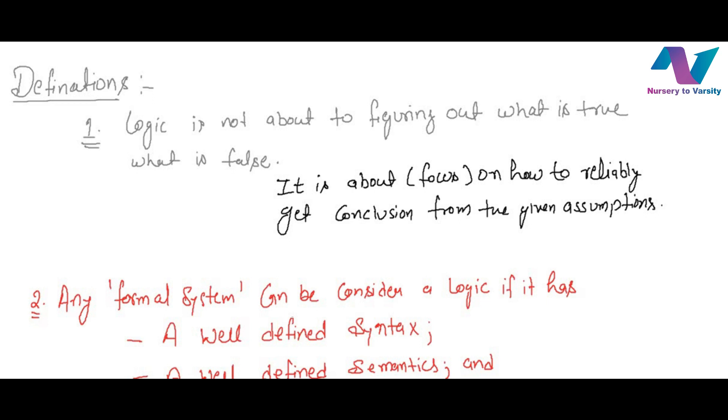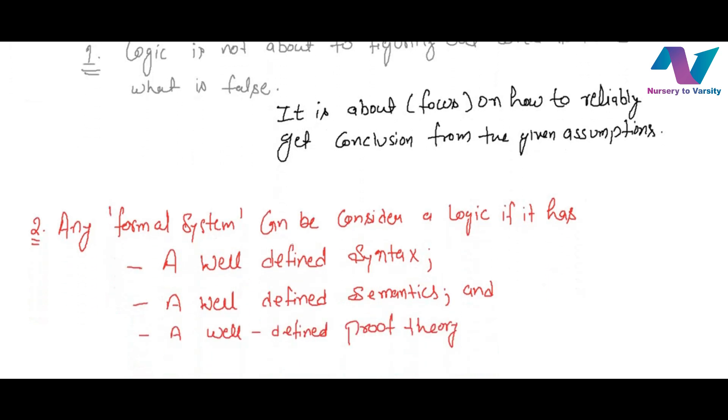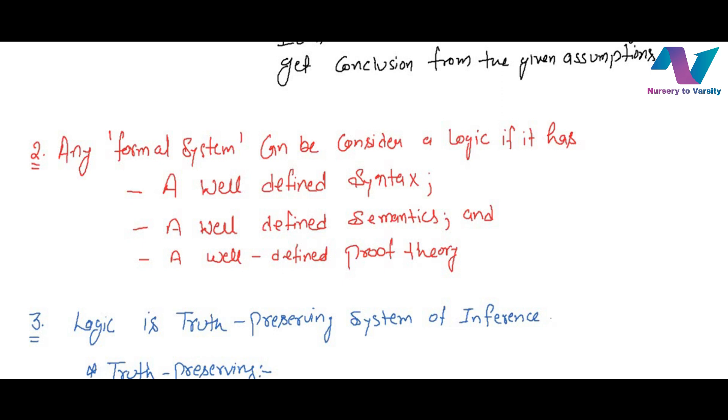Logic is not about figuring out what is true what is false but it is about finding the reliable conclusion from the given assumptions. Our second definition is any formal system can be considered as logic if it has three properties: a well defined syntax, a well defined semantic, and a well defined proof theory.